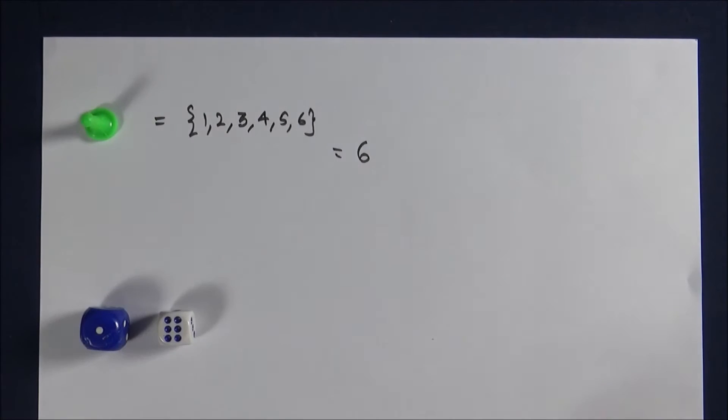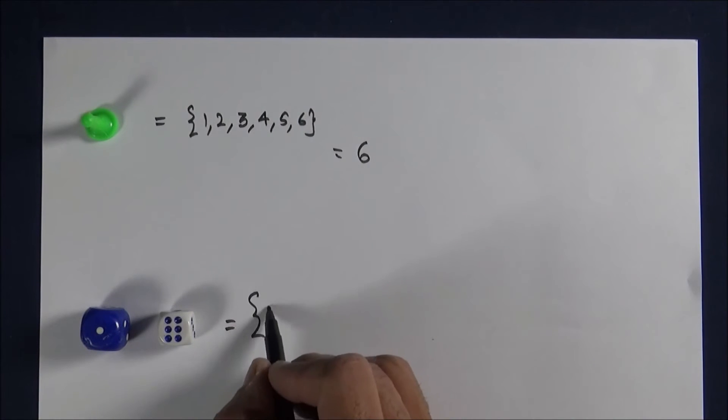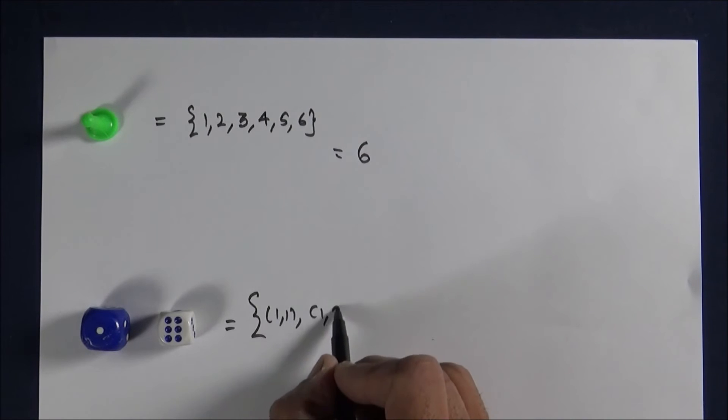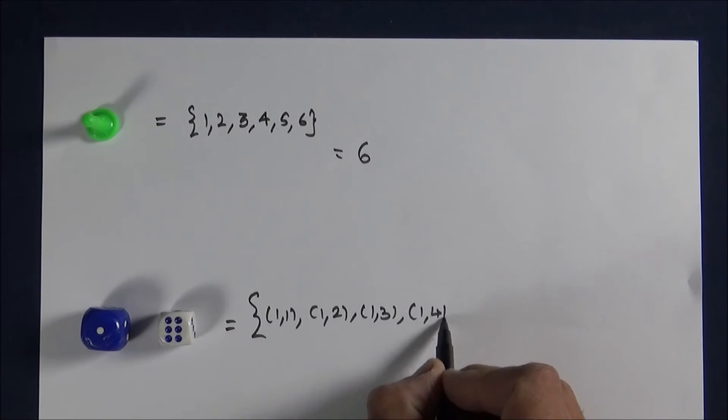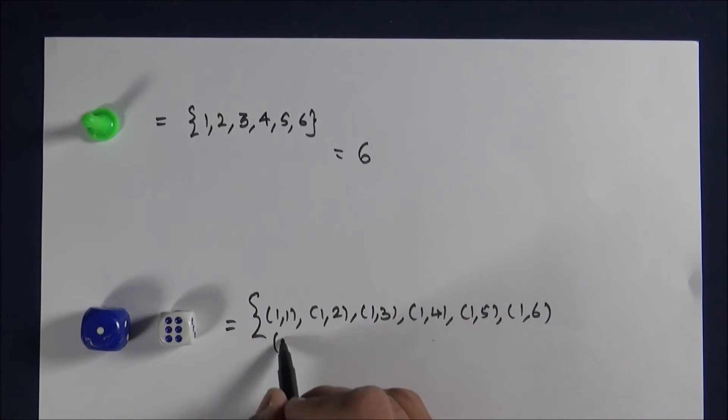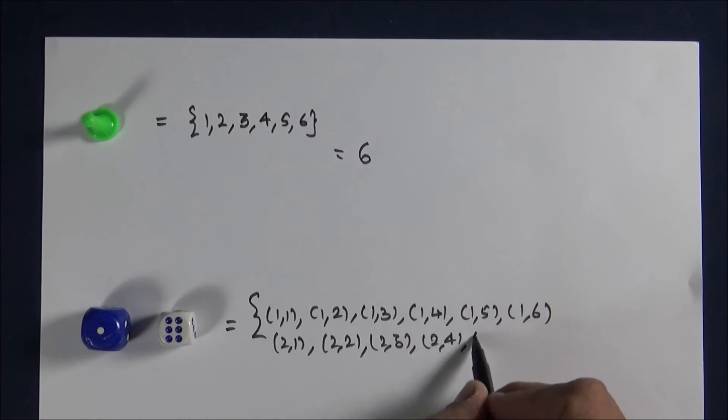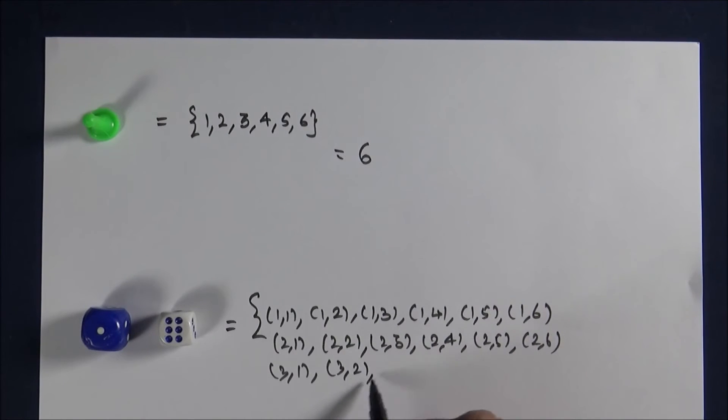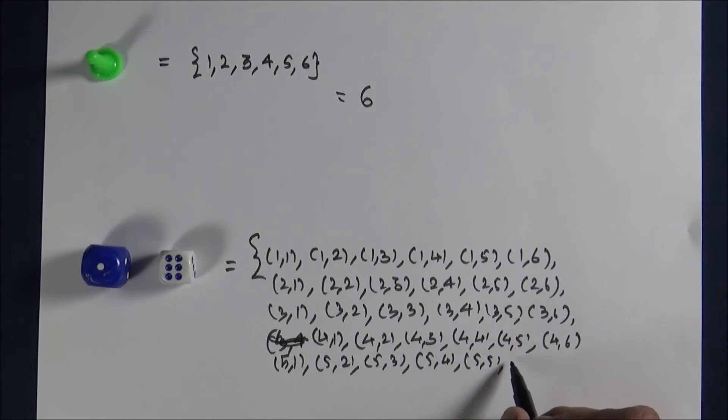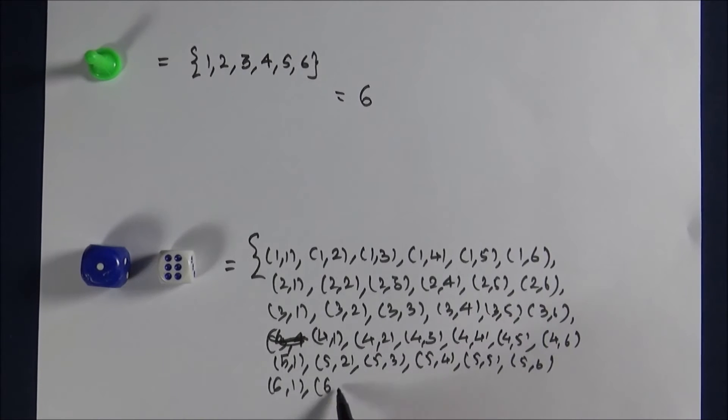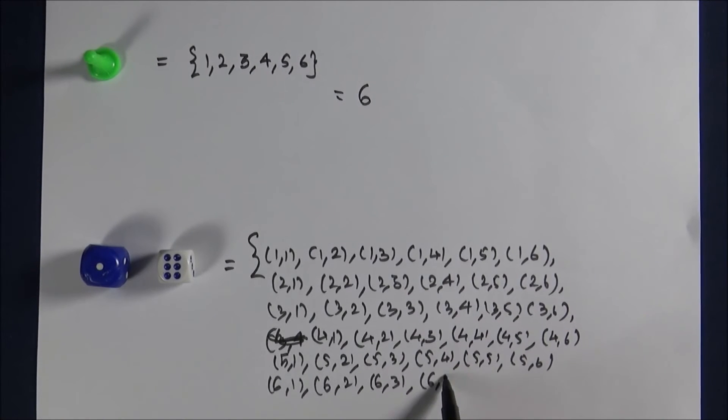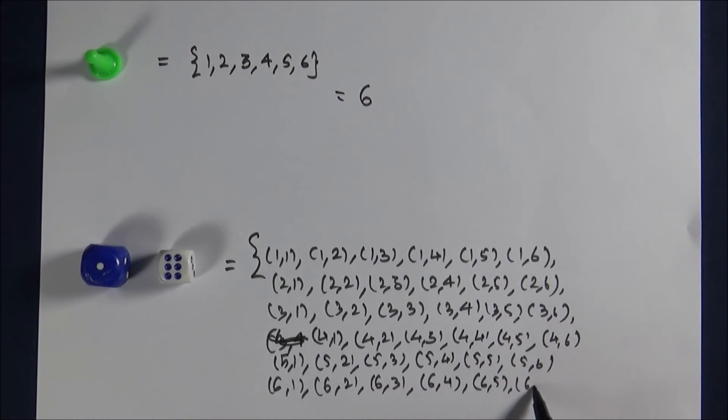When you have two dice, then it becomes 36. So when I throw a pair of dice, then outcomes are (1,1), (1,2), (1,3), and so on. Thirty-six, so there will be thirty-six outcomes.